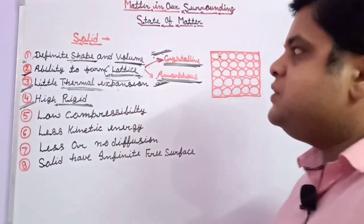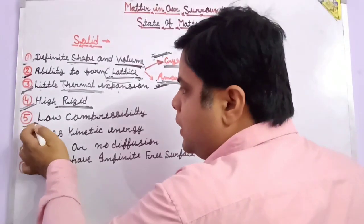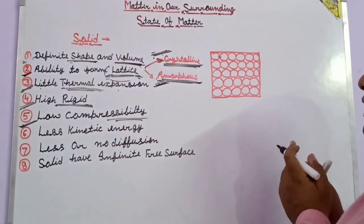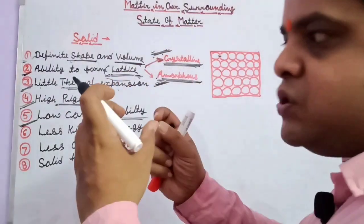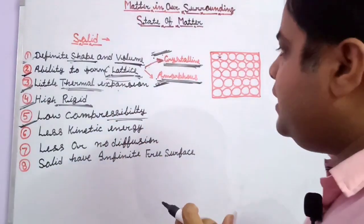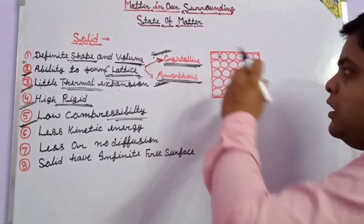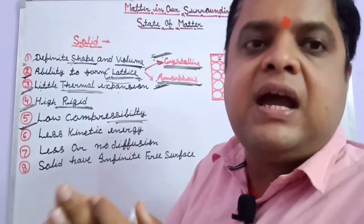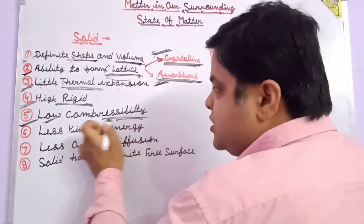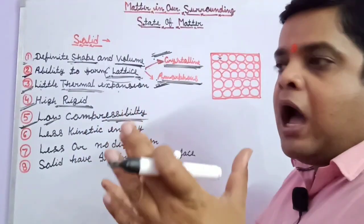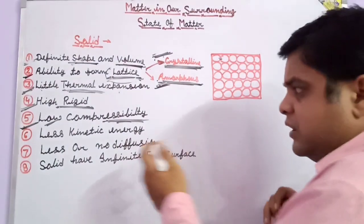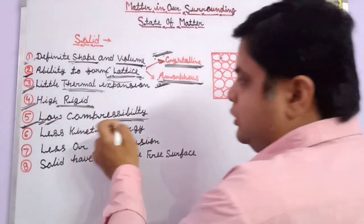Solids also have a low compressibility condition. Because the particles are definitely arranged in a definite pattern, the kinetic energy is very less and intermolecular forces are very high, with very less intermolecular space. So solids are very low compressible — when external force is applied, they cannot be compressed easily. This is the low compressibility condition of solids.